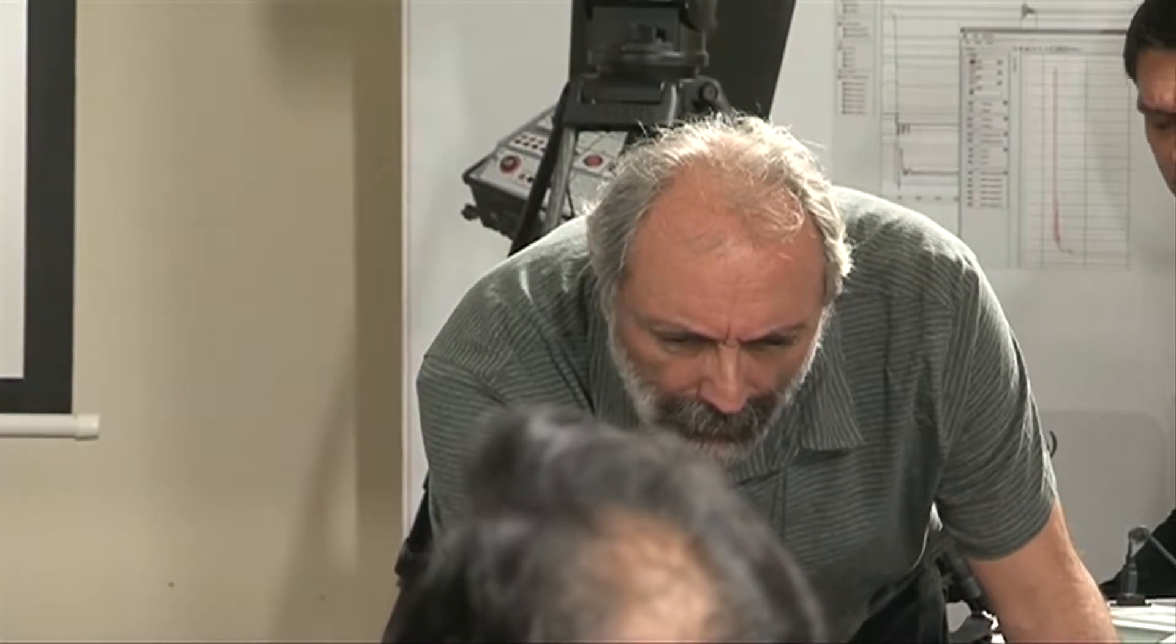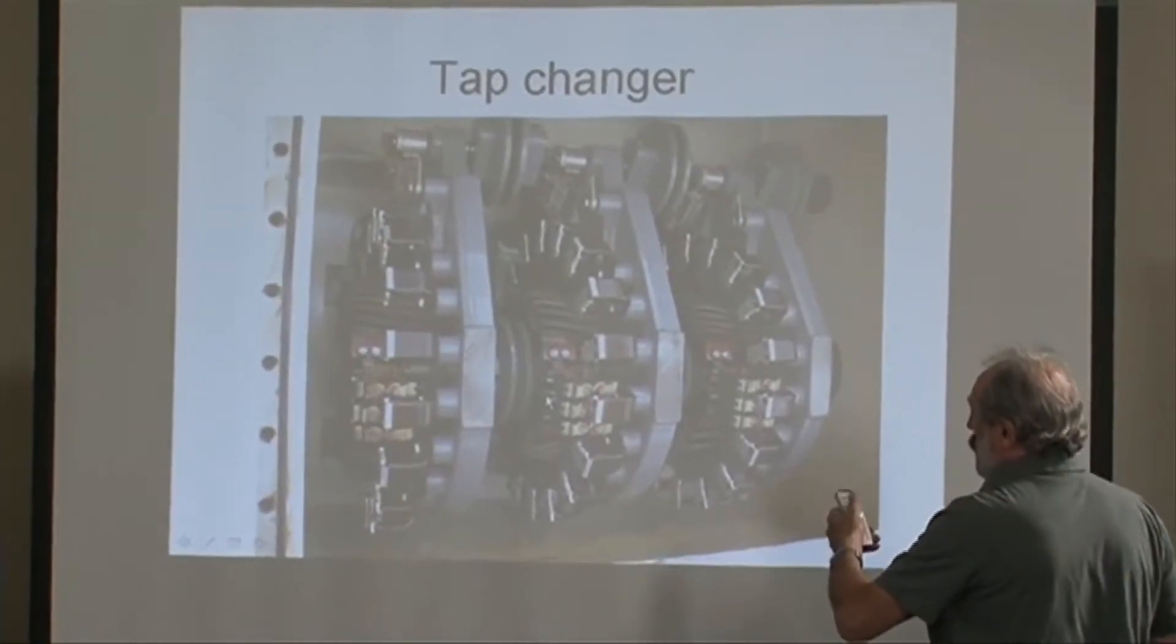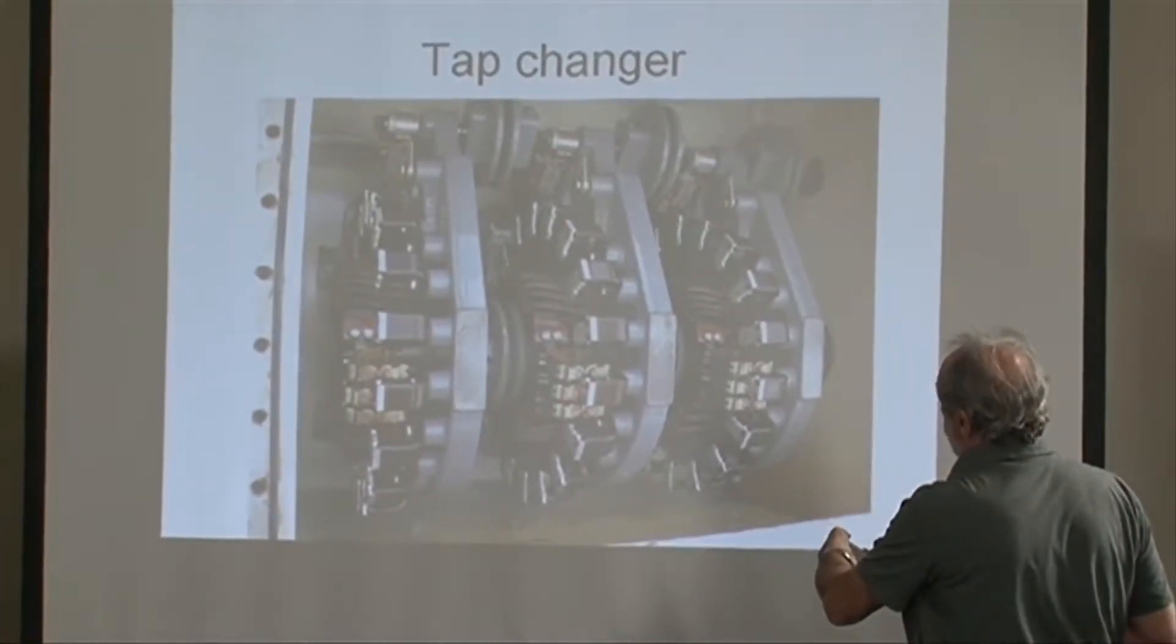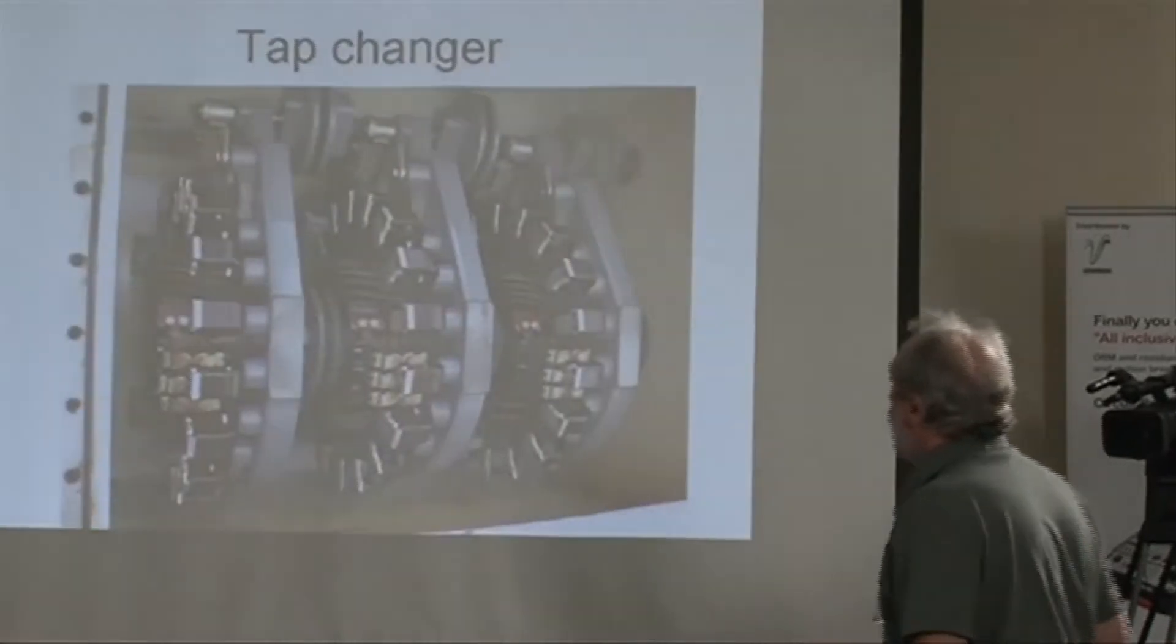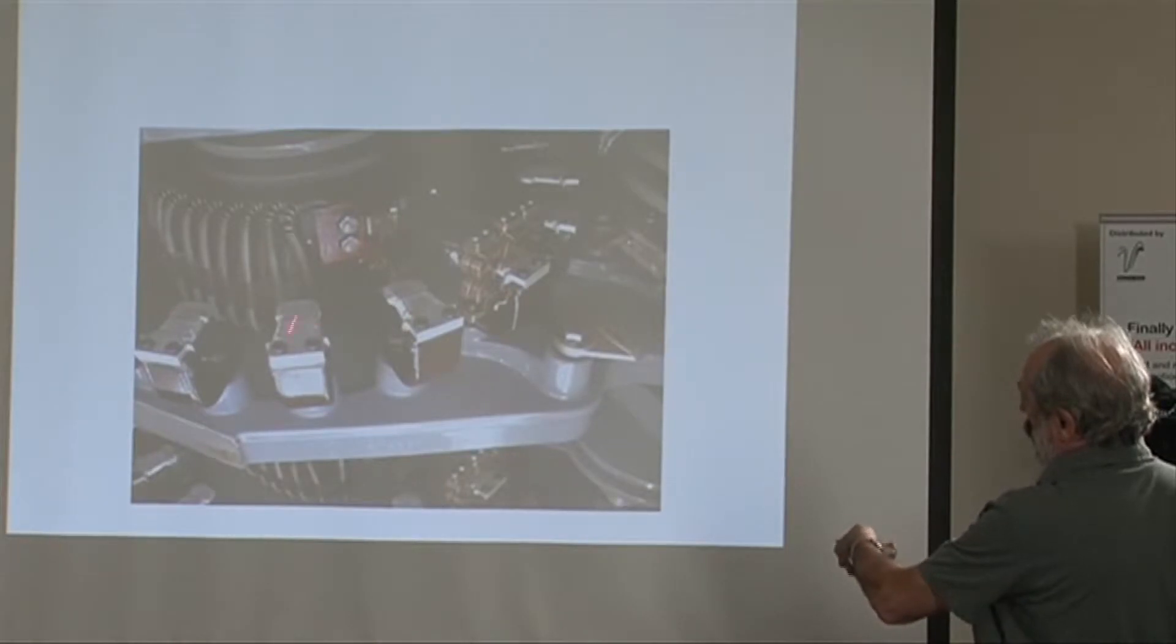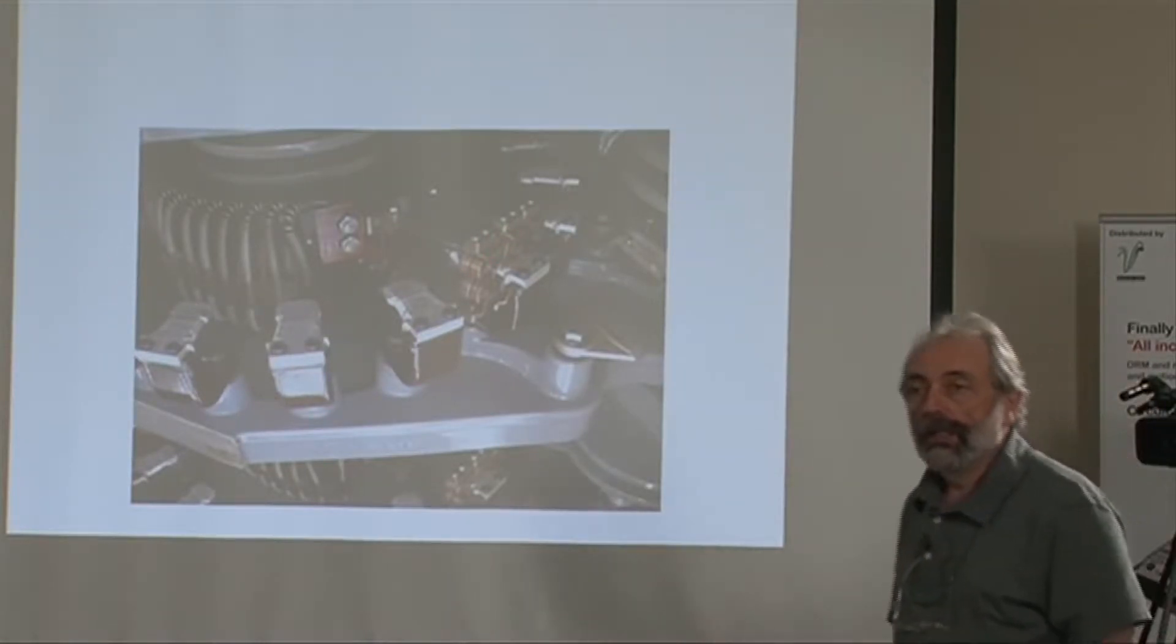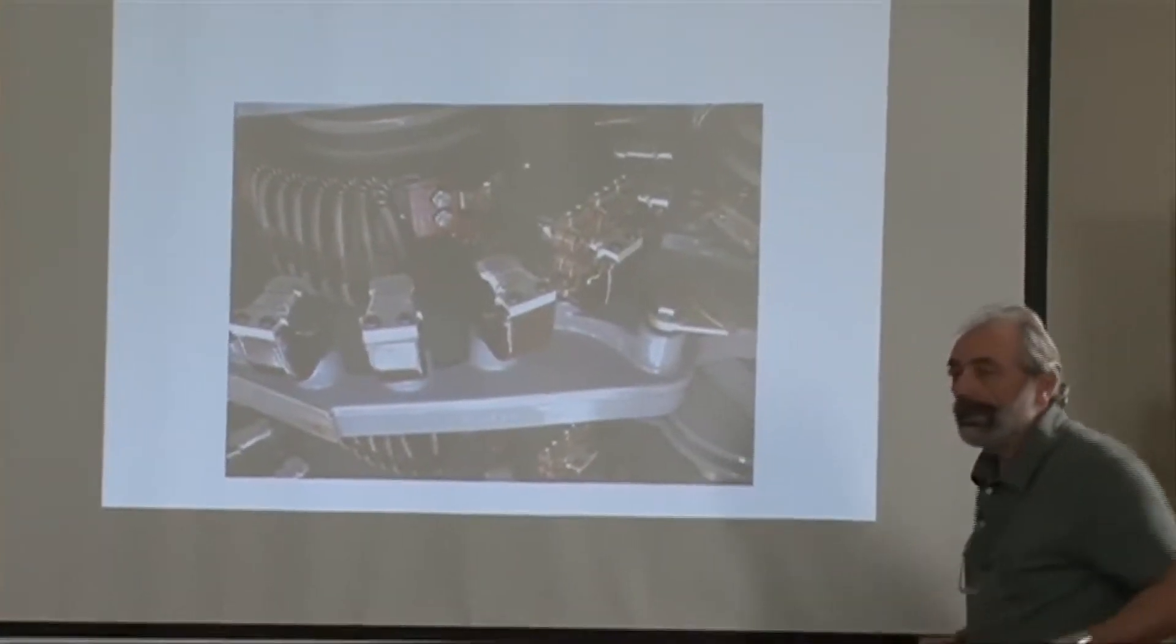And some of you have seen this in my presentation the other day. Here is the tap changer. Here is the way we go back. The three fingers of the moving contact. And the white surface here that you can see is the fixed stationary contact. So these rollers go around and make contact from tap to tap. So again this spring looking thing here is a resistor.